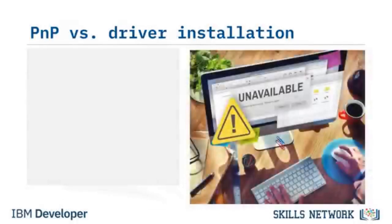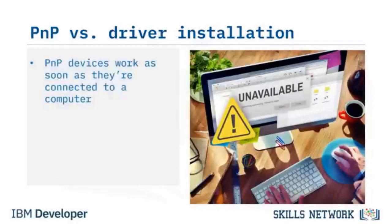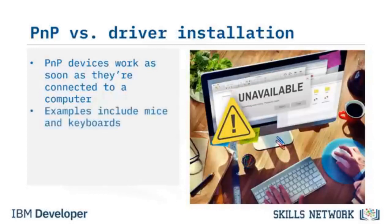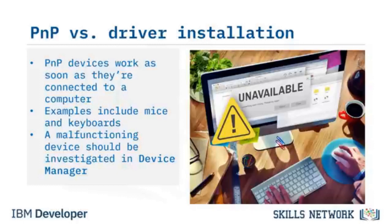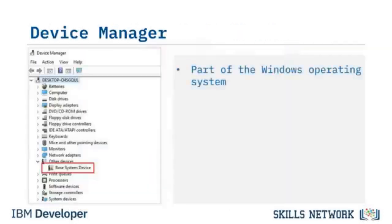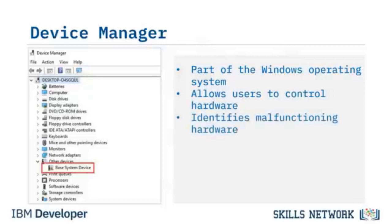Plug-and-play, sometimes abbreviated as PNP, describes devices that work with a computer system as soon as they are connected. The user does not have to manually install drivers or even tell the computer that a new device has been added. Examples of PNP devices include mice and keyboards. If a PNP device doesn't function in Windows, the user should look in Device Manager for an indication of a problem. Device Manager is part of the Windows operating system and allows users to view and control the hardware attached to the computer.